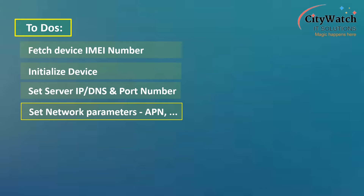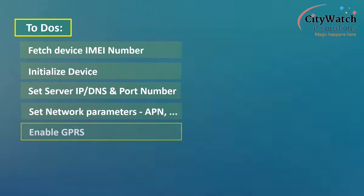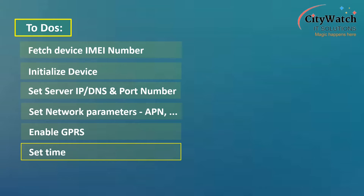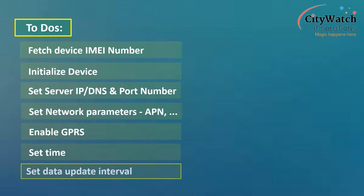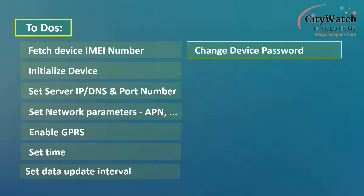When I am done setting the network parameters, I will proceed to enable GPRS so the device can push updates through the data network. Afterwards I will set the device time to GMT+1, which is Nigerian time. I will then set the update interval to specify how often the device pushes updates to the backend server. After this I will change the device factory-set password as a security measure.